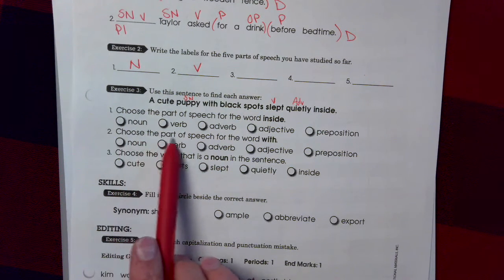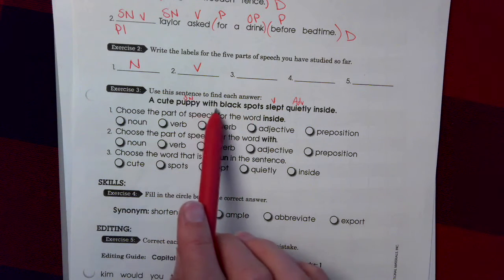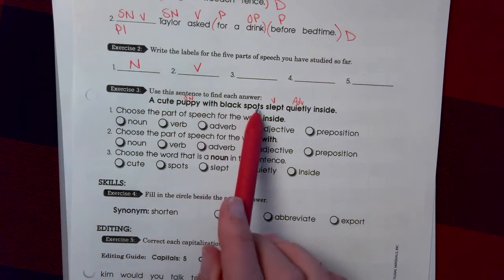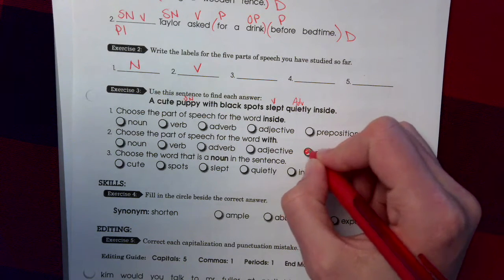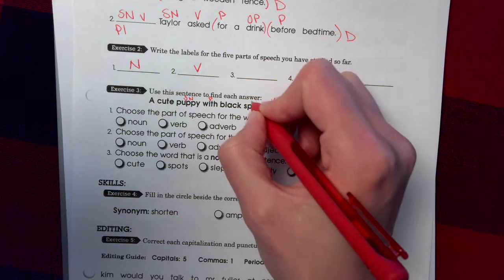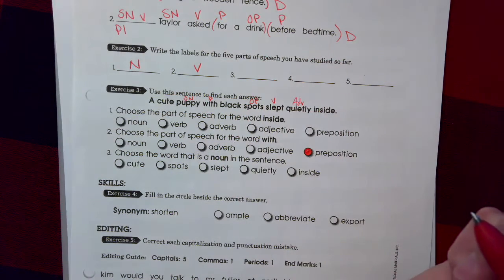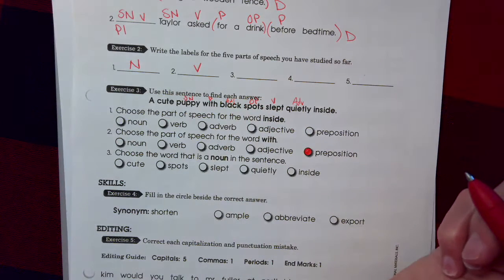Number 2. Choose the part of speech for the word with. With what? Spots. Okay. So with is one of those prepositions. With. Preposition. With what? Spots. Object of the preposition. What kind of spots? Black. Adjective.